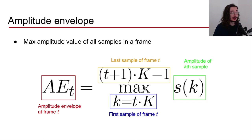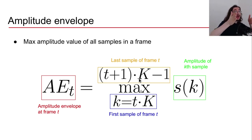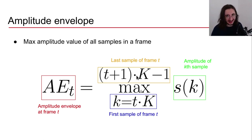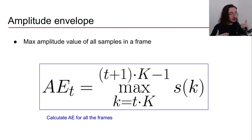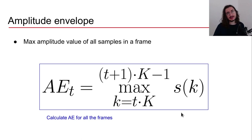We can find the last sample of frame t by taking the first sample of the next frame — (t+1) times K — and subtracting one. So the amplitude envelope at frame t is this max over all samples in that frame. We calculate this for all frames across the entire audio signal.